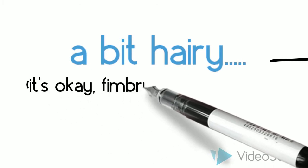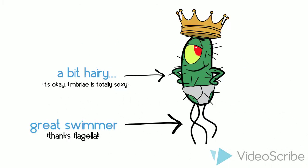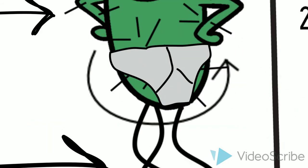Compared to my cousins, I'm a very good swimmer and I'm also quite hairy. But we are all about the same height and size, around 2 micrometers in height and 0.5 micrometers circumference.